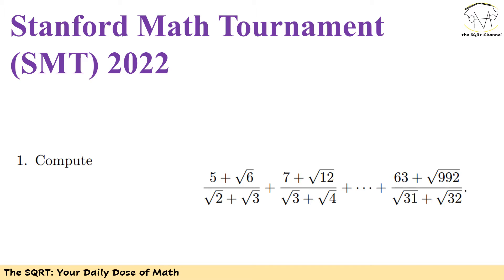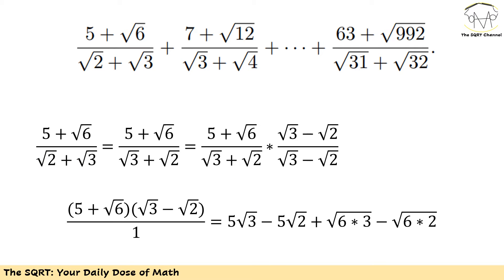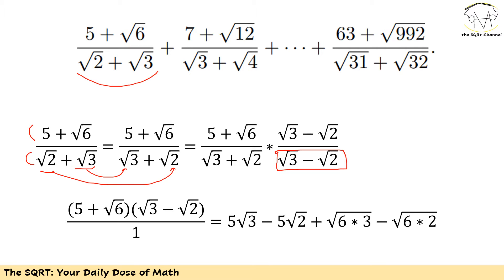To solve this, I'm going to start from the first step. I have (5 + √6) / (√2 + √3). I'm going to simplify this fraction by multiplying both the top and bottom by (√3 − √2). First, let me rewrite the denominator as √3 + √2. Multiplying top and bottom by (√3 − √2), the bottom becomes 1.